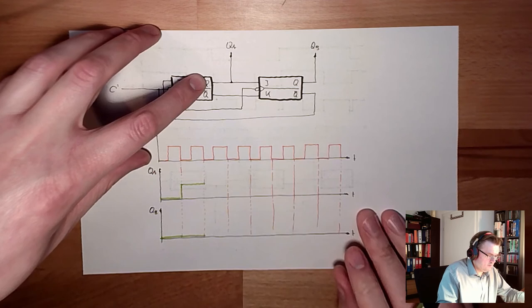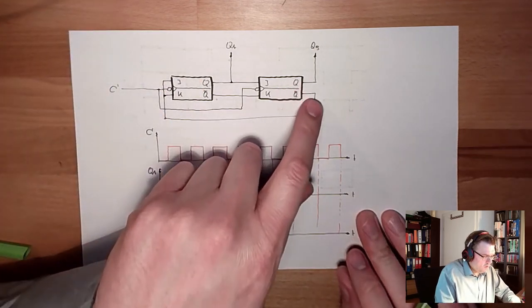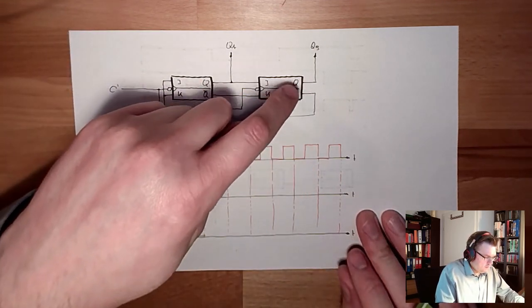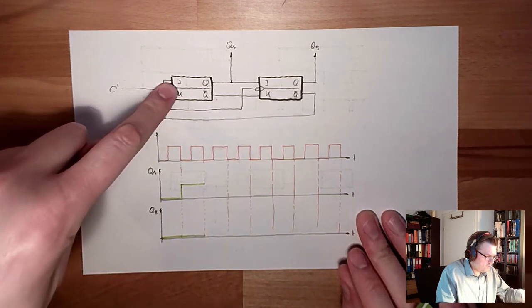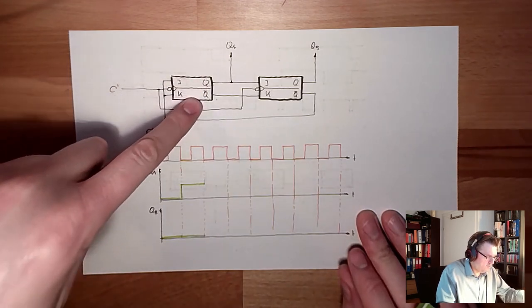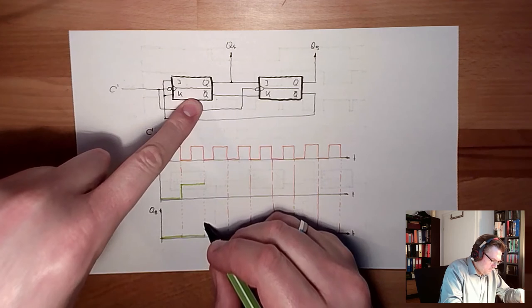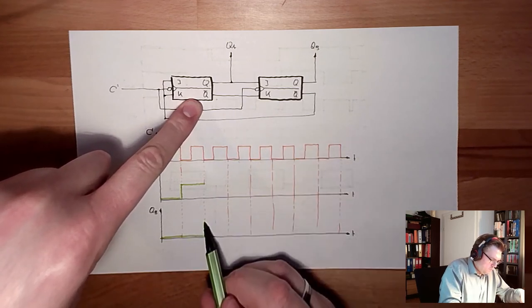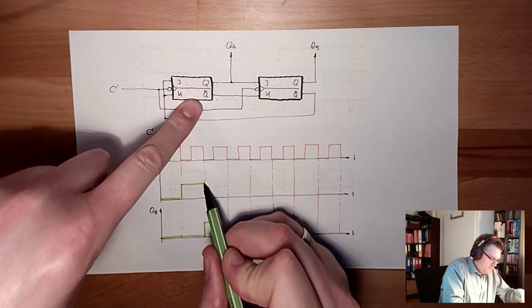Next thing. Now, zero, one. This is toggling again. But now, we have a one, zero. So, this will appear here. One, zero. This is toggling.